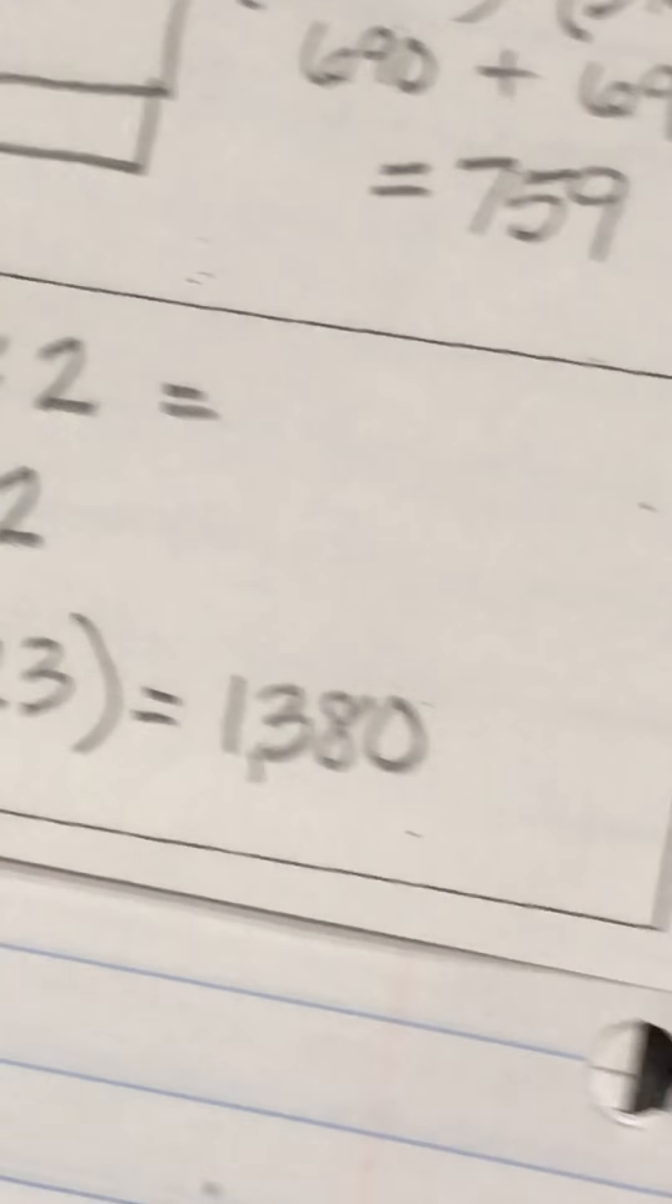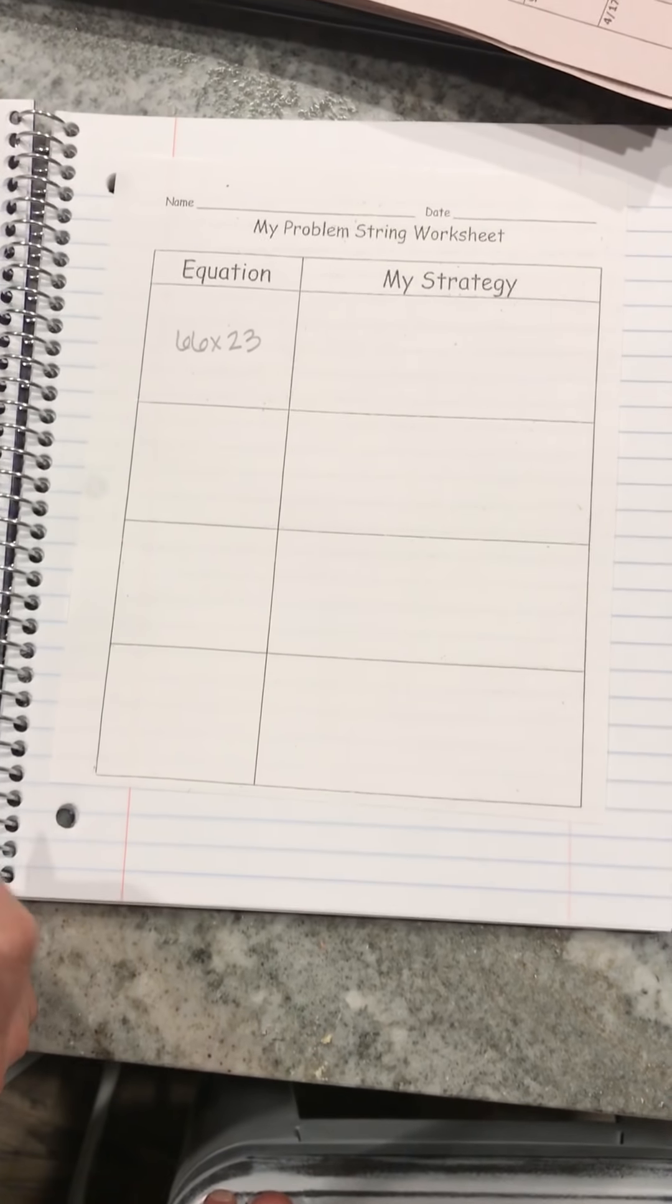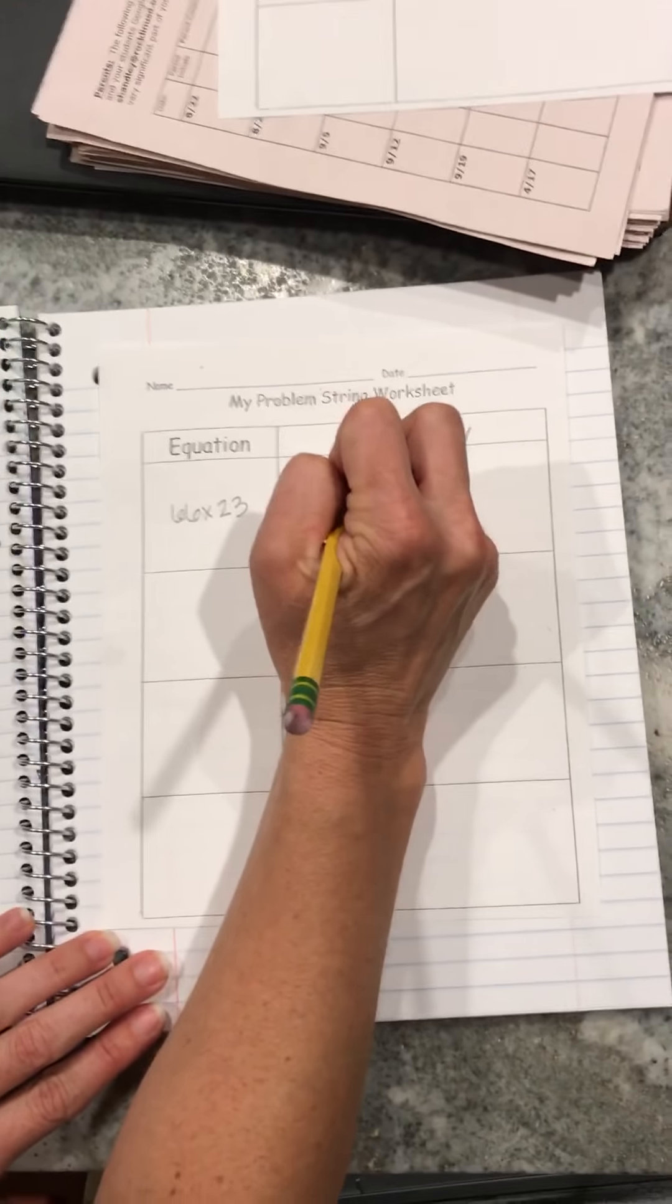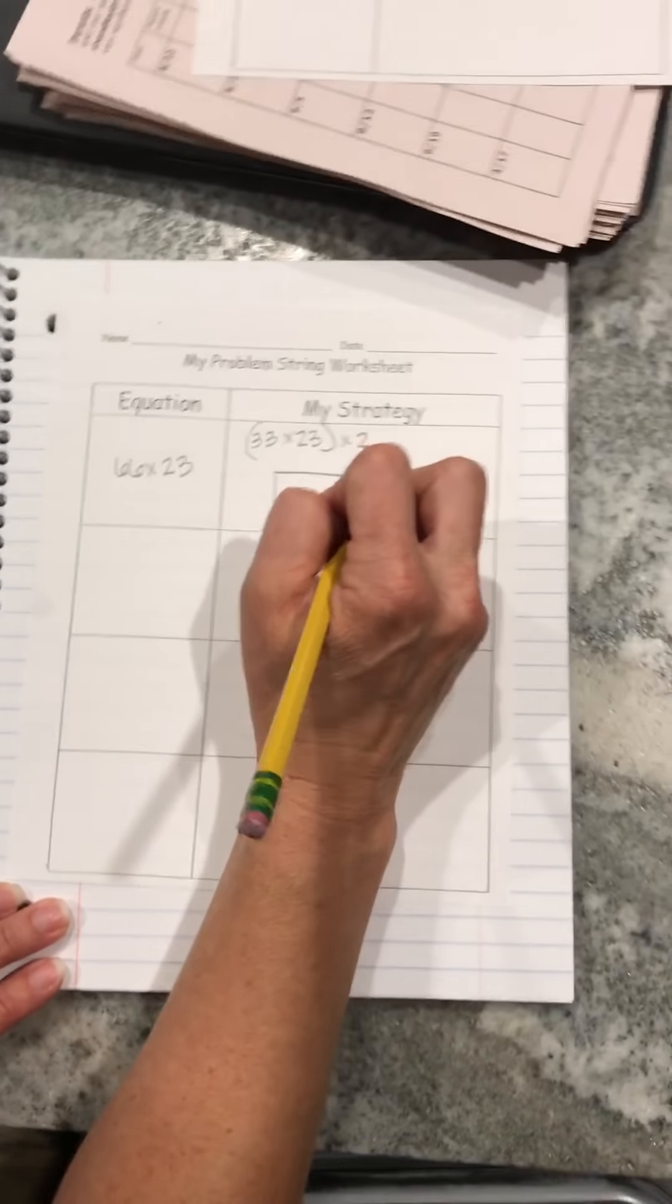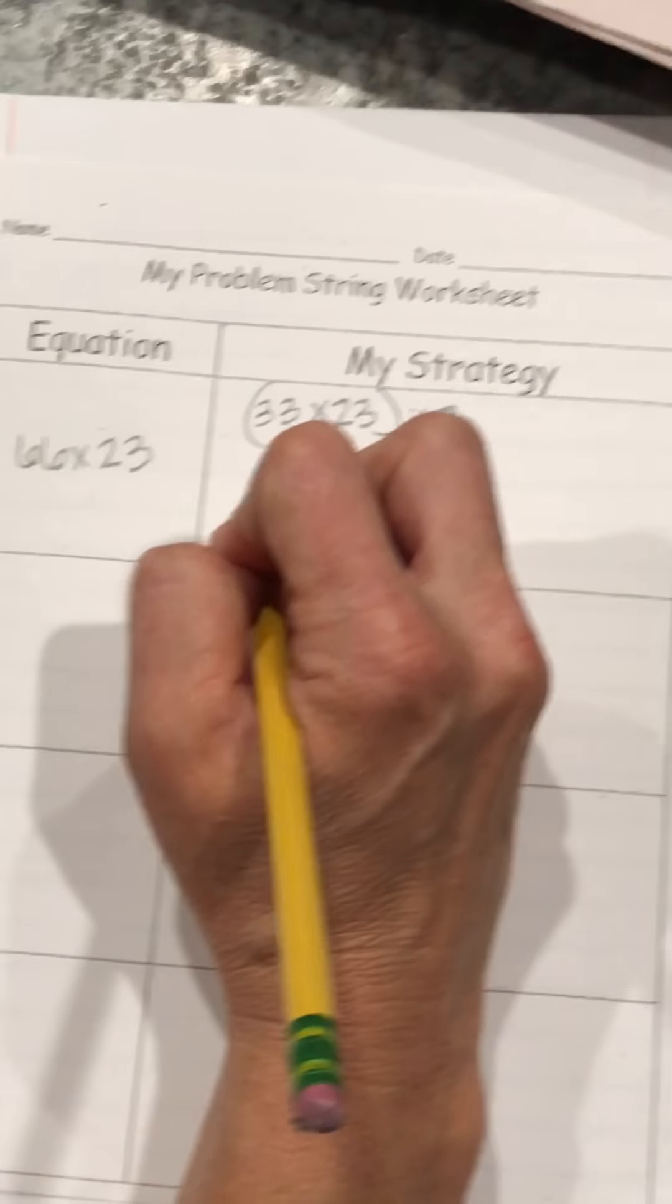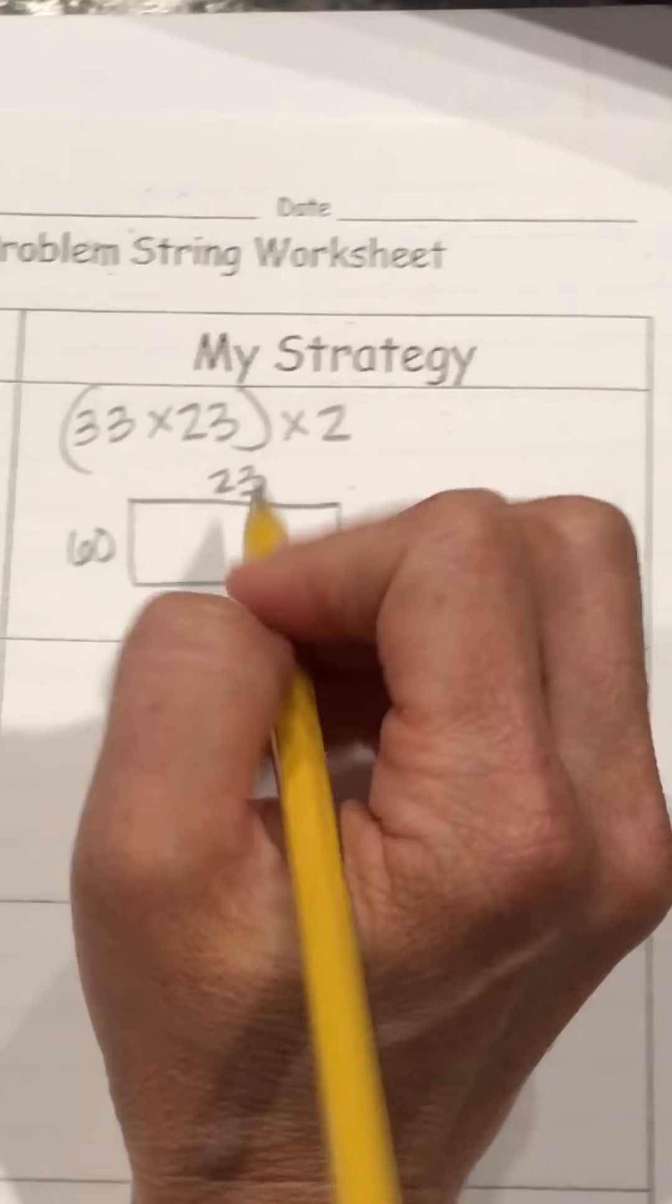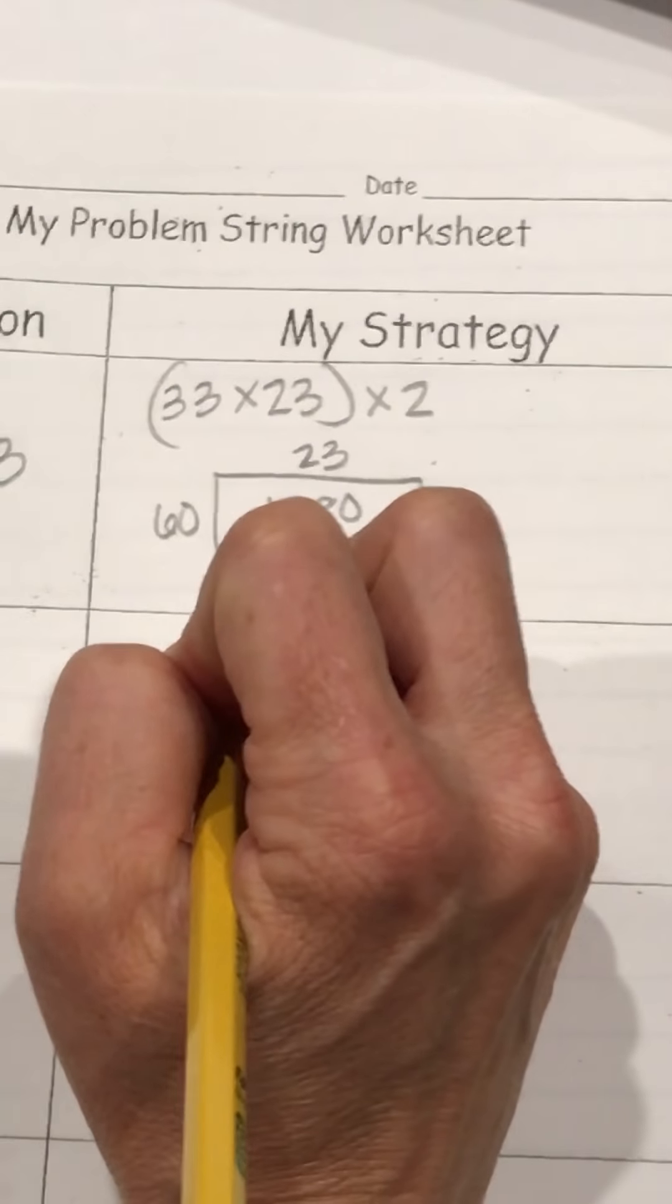My next problem is 66 times 23. With 66, I can take my previous one of 33 times 23 and double it, or I can do my one that I've done recently, which was 60 times 23. And 60 times 23 was 1380, we discovered. And then I just have 6 more.